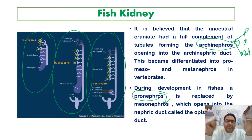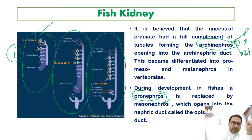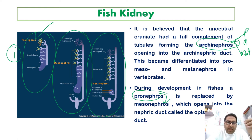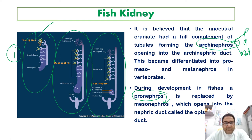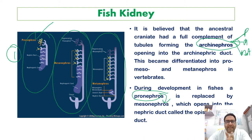The pronephros is the earliest nephric stage. It constitutes the mature kidney in most lower vertebrates, extends from the 4th to the 14th somite, and consists of 6 to 10 pairs of tubules. These spill into a pair of primary ducts that extend caudally and eventually reach and empty into the cloaca. The pronephros is a vestigial structure and disappears completely by the 4th week of human development.